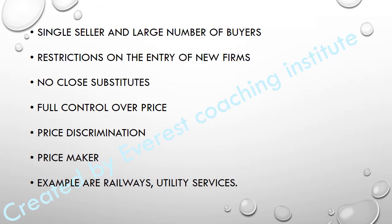When there is a single seller, there is full control over the price. The monopolist is the price maker, not the price taker. In perfect competition the seller is the price taker, but in monopoly the seller is the price maker because he is the single seller. He can also practice price discrimination — charging different prices to different buyers.